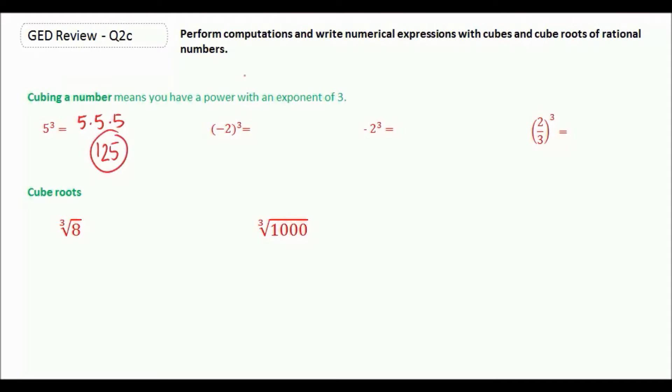Negative 2 quantity cubed would be negative 2 times negative 2 times negative 2. These here give you a positive 4, so a positive 4 times a negative 2 is a negative 8.